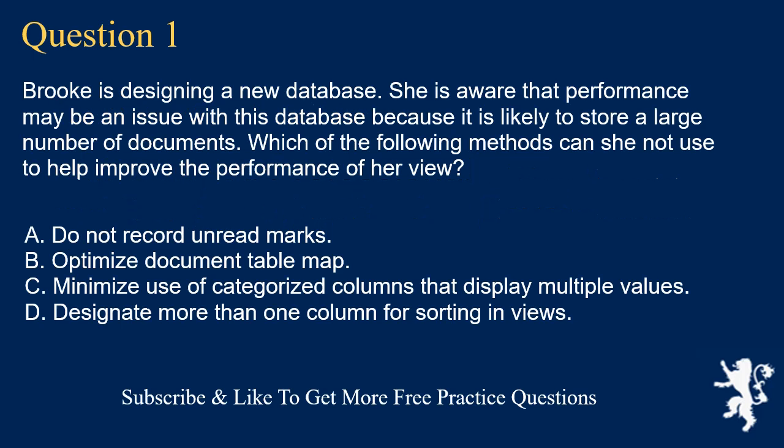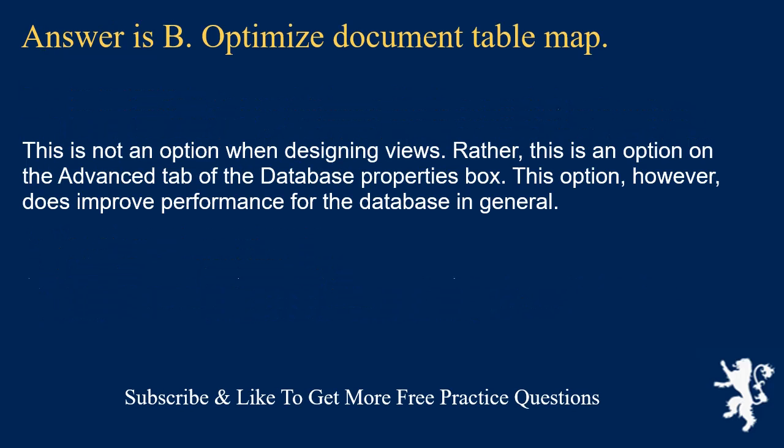Question 1. Brooke is designing a new database. She is aware that performance may be an issue because it is likely to store a large number of documents. Which of the following methods can she not use to help improve the performance of her view? Do not record unread marks. Optimize document table map. Minimize use of categorized columns that display multiple values. Designate more than one column for sorting in views. Answer is B: Optimize document table map. This is not an option when designing views; rather, this is an option on the advanced tab of the database properties box.